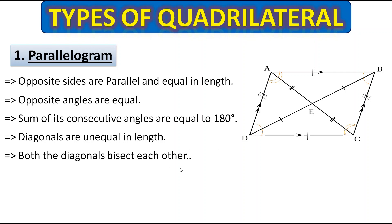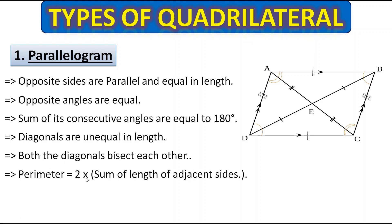But both diagonals bisect each other. Bisect means they make half of each other. So this diagonal gets bisected by the other, making this length equal to this length, and this length equal to this length. To find the perimeter, multiply 2 by the sum of the lengths of adjacent sides — this side plus this side, multiplied by 2, gives the perimeter.